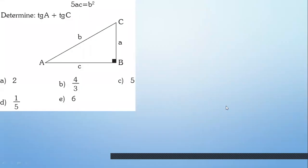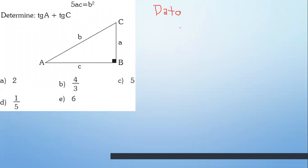El primer problema es el siguiente. ¿Qué es lo que te dan de dato? Están dando de dato eso. Entonces, puedes escribir en tu papel: dato 5ac igual a c cuadrado. ¿Qué más? Te están pidiendo determinar tangente de A más tangente de C. Ya con lo que has recordado de cateto opuesto, cateto adyacente, podrás resolverlo.